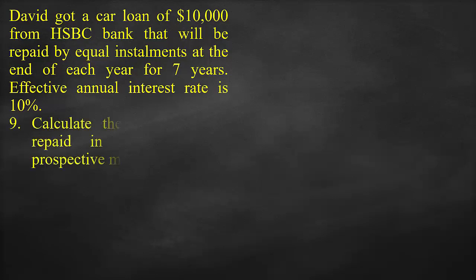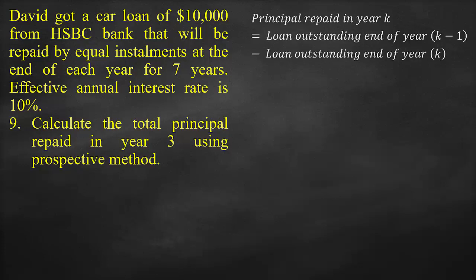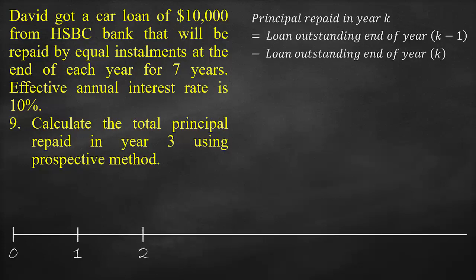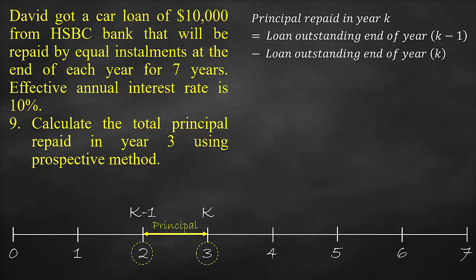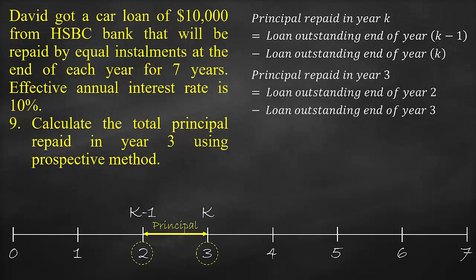The next part of the question is to calculate the total principal repaid in Year 3 using the prospective method. In order to know the value of the principal repaid in any year, we need to know the value of the loan at that year and the value of the loan of the previous year, then find the difference of these two values — this is the amount paid in principal. To estimate the total principal repaid in Year 3, we need the loan outstanding at Year 3 and the previous year at Year 2.